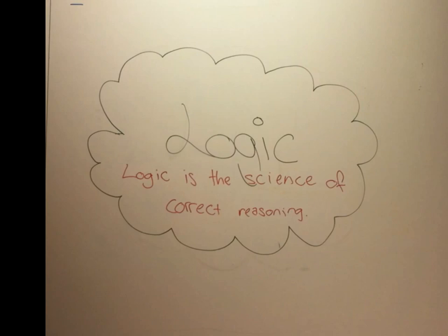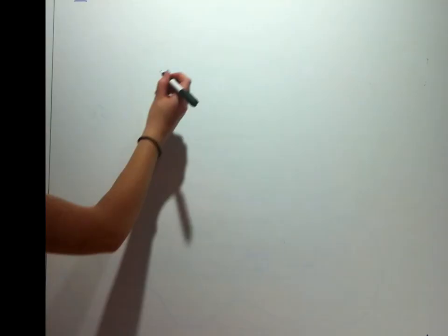What is reasoning? According to Aristotle, reasoning is an argument in which certain assumptions or premises are laid down, and then something other than these necessarily follows.